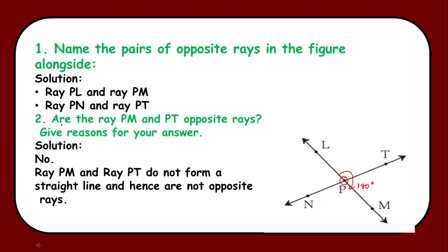Then we have the second question as are the ray PM and PT opposite rays? If yes or no you need to justify your answer. That is you need to give reason. Now children see ray PM and PT. Let's check the three conditions.